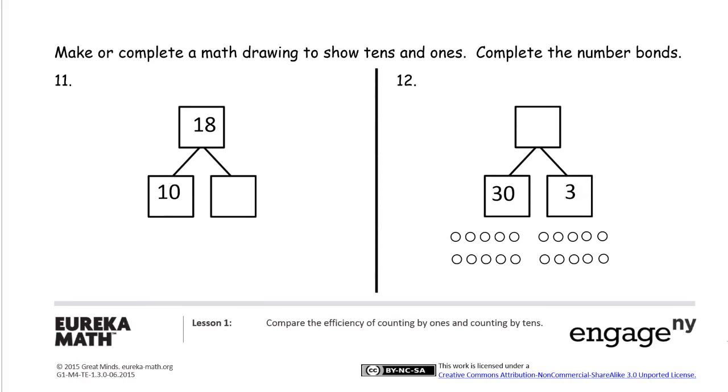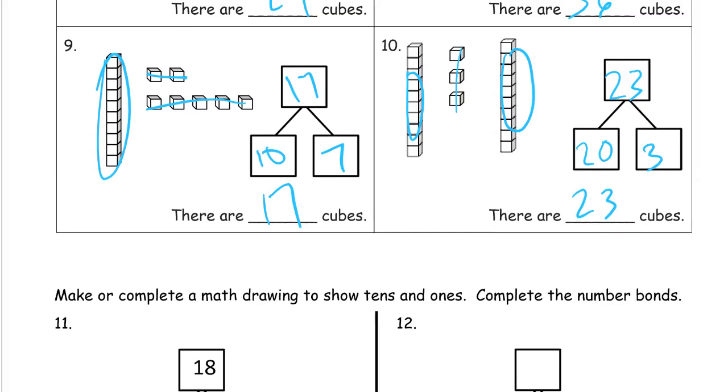Make or complete a math drawing to show tens and ones. Complete the number bonds. So here's the number bond. We've got an eighteen and a ten. And figure out what's missing. So you could do this. You probably might already know. But to do the math drawing, we can use the cubes. And we can just make quick tens.